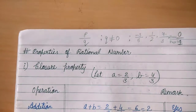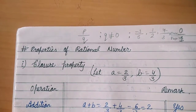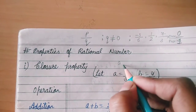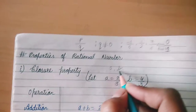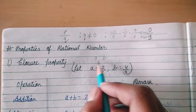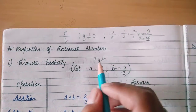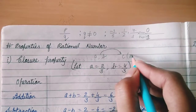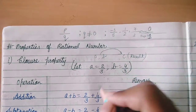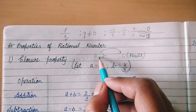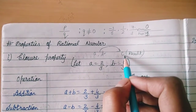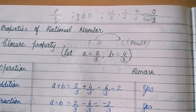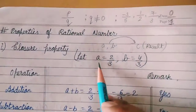So firstly we will see closure property. Closure property says that if two numbers of the same kind — here we are looking for rational numbers — so we will take A and B as rational numbers. If A and B both are rational numbers, their result will also be a rational number. If we are applying addition, A plus B answer will also be a rational number.